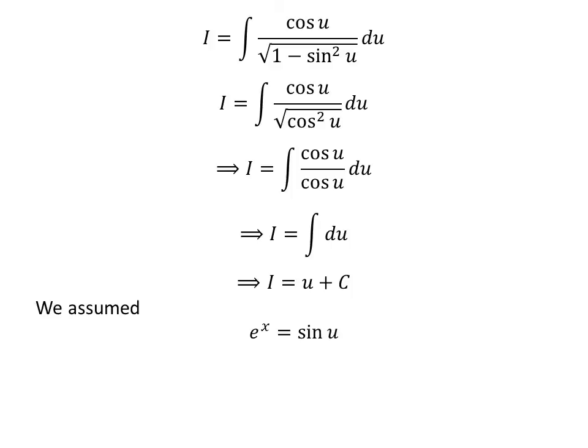We assumed exponential of x equals sine of u. Since arc sine is the inverse function of sine, arc sine of exponential of x equals u. Thus, replacing u by its value, i equals arc sine of exponential of x plus capital C.